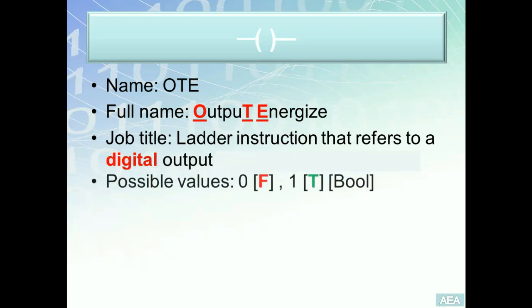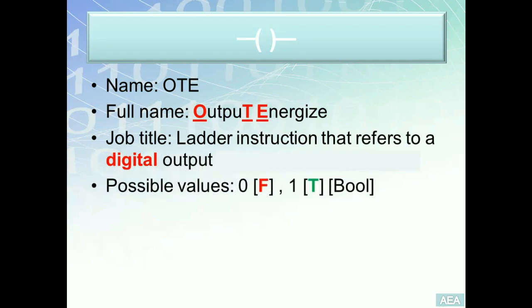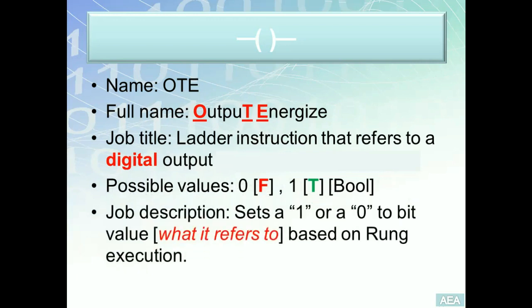The possible values for this instruction wherever it exists in the program will be either true or false. This instruction is going to set a 1 or a 0 in whatever it refers to. So similar to XIC and XIO, this instruction is going to be tied to an address, to an output, and based on the rung execution, it will be in one of two states. If it's true, it will write 1 in a memory location; if it is false, it will write a 0 into a memory location.